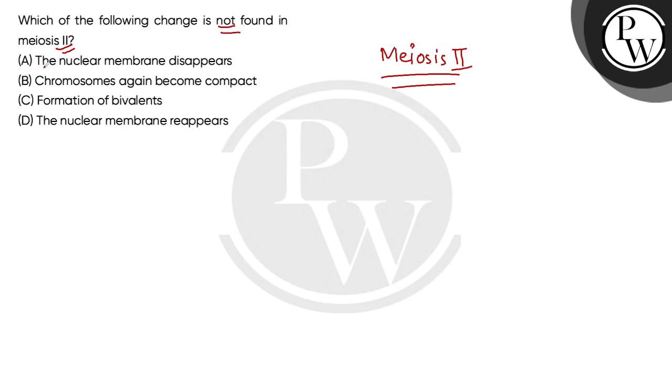Now we will talk about our options. Nuclear membrane disappears - this happens in meiosis 2, prophase 2.